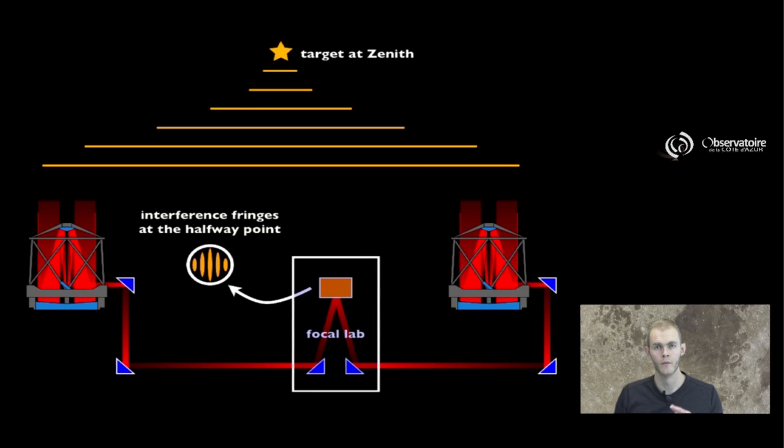But if you do put your focal station at the exact halfway point, assuming that you're observing a target that is exactly above you at the zenith, then you're going to be able to observe interference fringes at this exact halfway point.